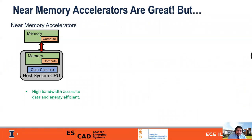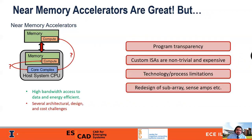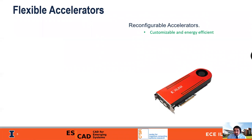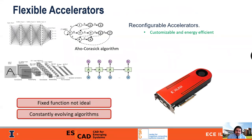But there have always been architectural and design challenges, ranging from program transparency to some of them requiring custom instructions, which has a lot of verification and validation overheads. Traditionally, there have been technology and process limitations, and even redesigning a sub-array or sense amplifier still requires time and money. On the other hand, reconfigurable computing provides us with customization and energy efficiency. And in the world of constantly evolving algorithms, fixed function accelerators are simply not ideal.